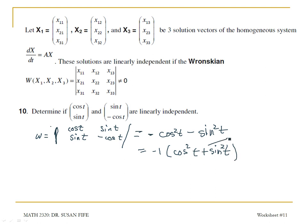Cosine squared plus sine squared is 1. So I get negative 1 times 1 gives me negative 1, which is not equal to 0. And so these two vectors are linearly independent.